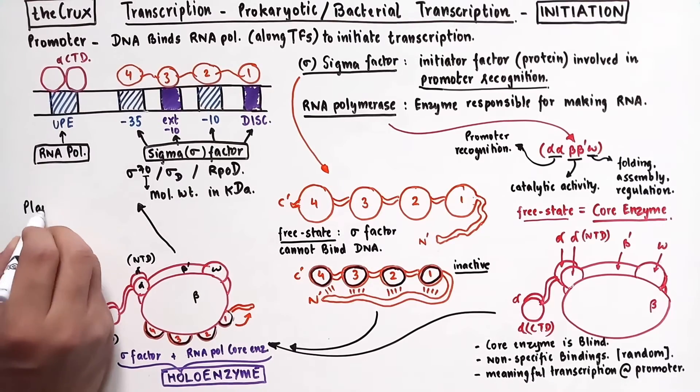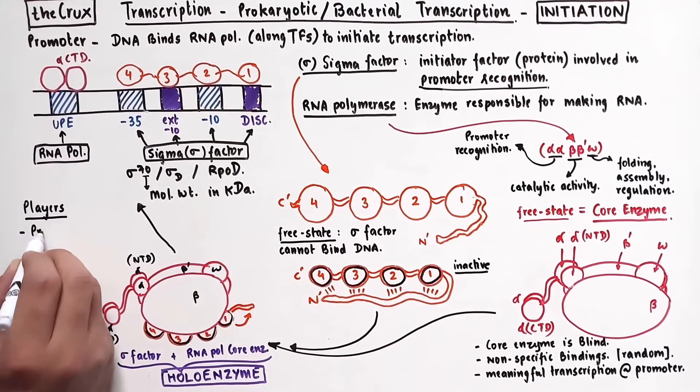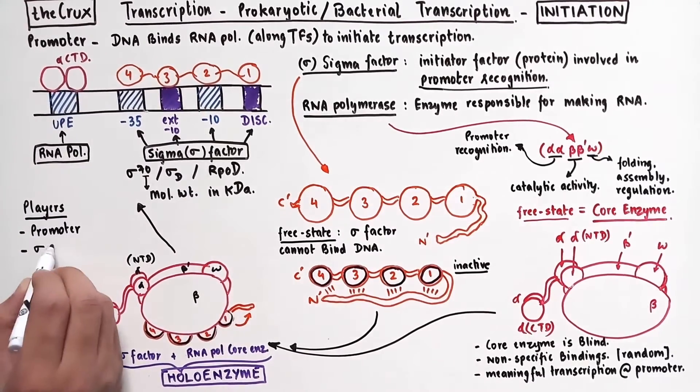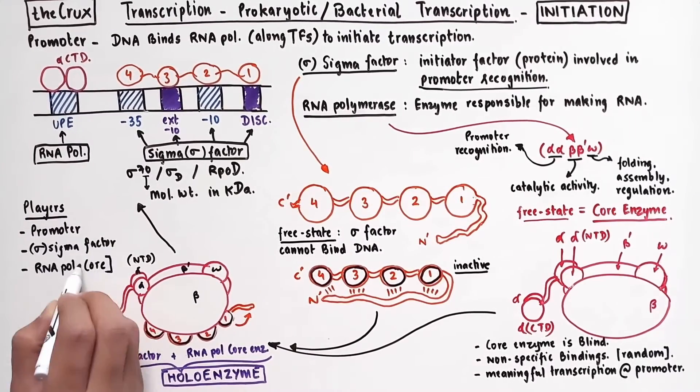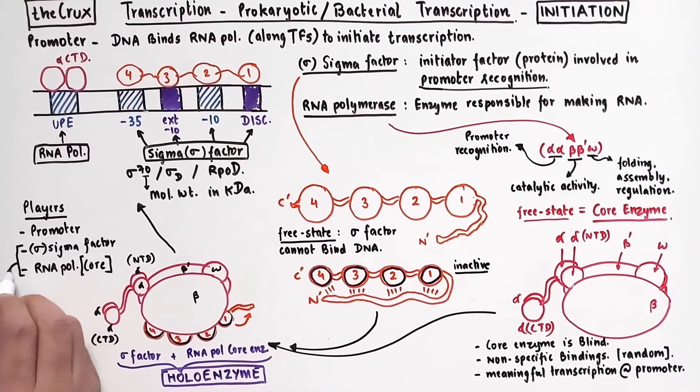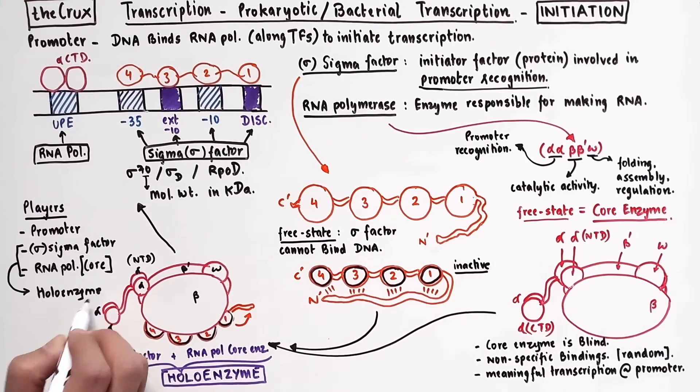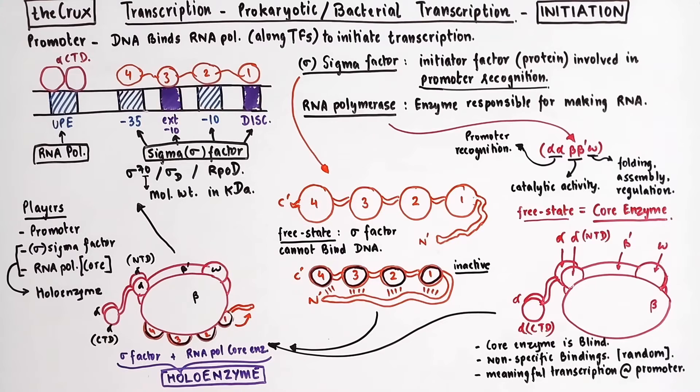So the key players that we will discuss in the initiation of transcription are the promoter DNA, sigma factor, and the core RNA polymerase, where the latter two give rise to the holoenzyme. Okay, so now that we understand these basics, let's take a comprehensive look into the process of initiation.